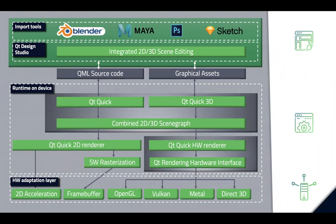With these new native graphics APIs, there's a big need for Qt to support all of them. Being a cross-platform toolkit, we want to abstract the differences away. To do that, we've now added with Qt 5.14 — for the first time — what we call the Qt Rendering Hardware Interface (RHI), a new abstraction layer for 3D graphics APIs.